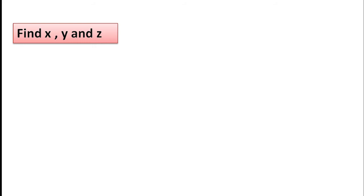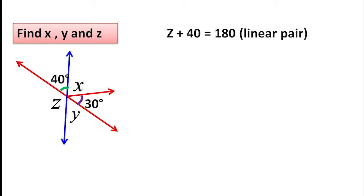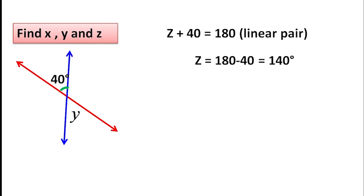Next we are going to do a question: find x, y, and z from the figure. Look at the figure — the blue colored line is a straight line, and the two angles on the left side form a linear pair, so z plus 40 equals 180 degrees, giving z equals 140 degrees. The two angles that are vertically opposite are equal, so y equals 40 degrees.